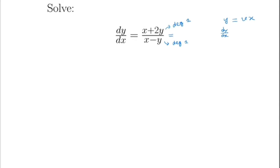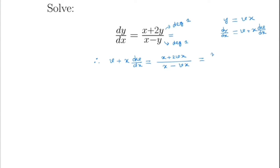By differentiating we get dy/dx = v + x(dv/dx). So we get v + x(dv/dx) = (x + 2vx) / (x - vx), which simplifies to (1 + 2v) / (1 - v).